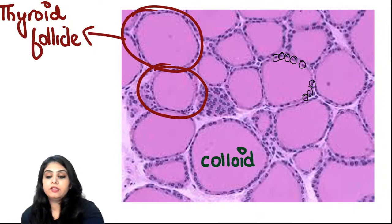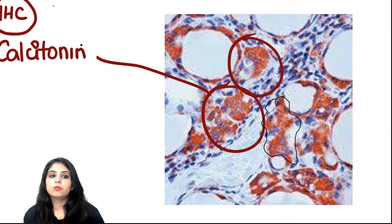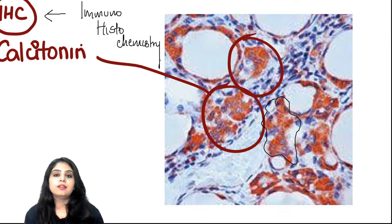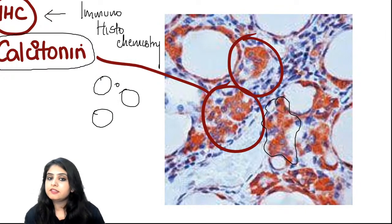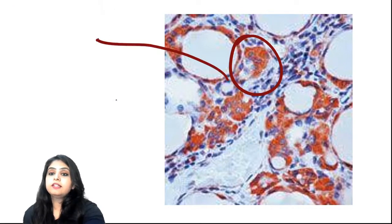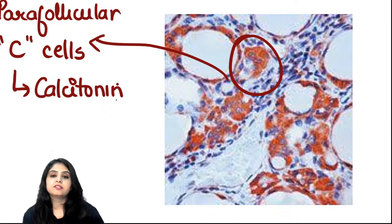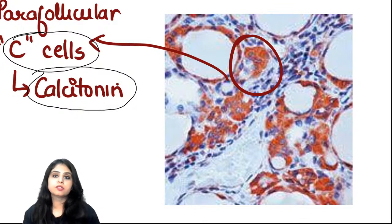Now I'll show a special stain. When you see brown color, that indicates immunohistochemistry. I put calcitonin as the marker and saw cells in between the follicles becoming positive. These cells positive for calcitonin are the parafollicular C cells - a very important cell type because it will later give rise to a specific tumor.